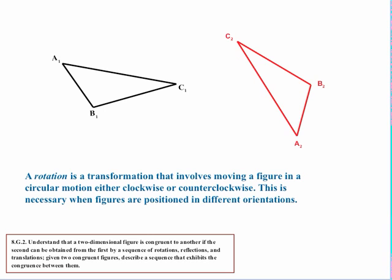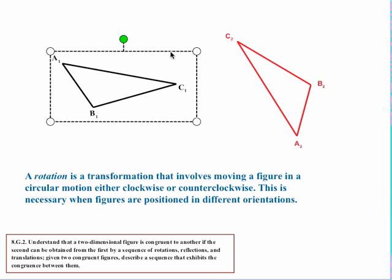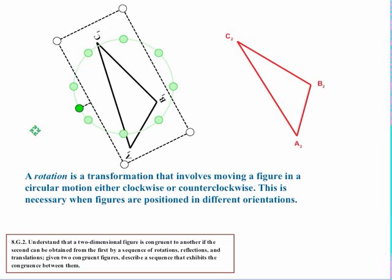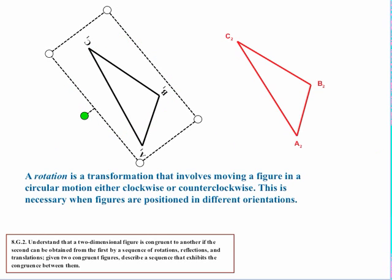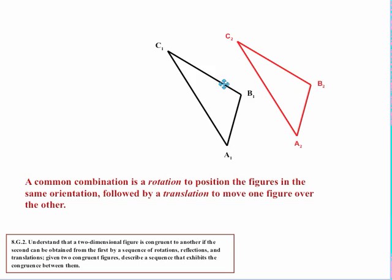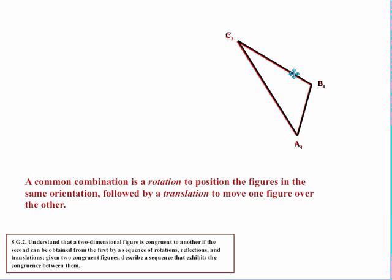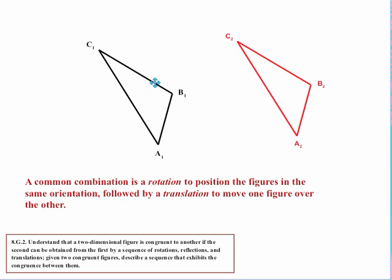So label the first triangle A sub 1, B sub 1, and C sub 1, and the corresponding vertices on the other triangle as A sub 2, B sub 2, and C sub 2. Now rotate this figure to where it's in the same orientation as the other triangle, then slide it over, and one fits exactly over the other — they're congruent. This involved a combination of a rotation to position the figure in the same orientation, and then a translation to move one figure over to fit exactly over the other. This is a very common combination for showing congruence.